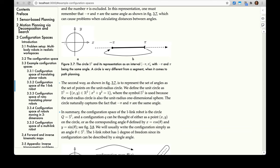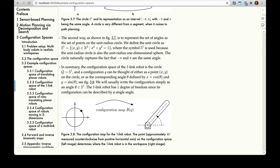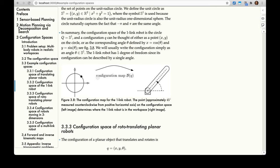It required an extra variable though, x and y, to get there. In summary, the configuration space of the one-link robot is the circle Q = S^1, and the configuration q can be thought of either as a point (x,y) on the circle or as the corresponding angle theta defined by x = cos(theta) and y = sin(theta). See figure 3.8. The configuration map takes you from the unit circle to the workspace, and this point corresponds to this angle. We will usually write the configuration simply as an angle theta in S^1. The one-link robot has one degree of freedom since its configuration can be described by a single angle.